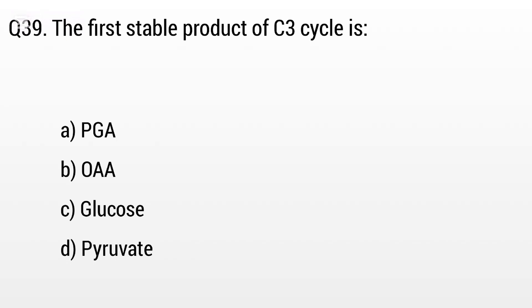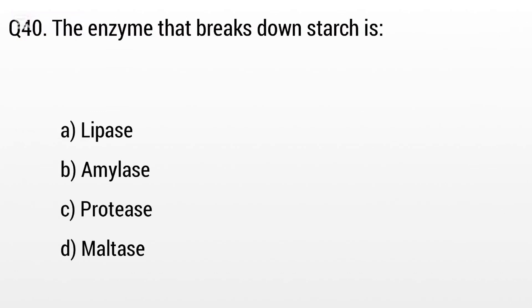Question 39. The first stable product of the C3 cycle is: Option A: PGA (3-phosphoglycerate), B: OAA, C: Glycolysis, D: Pyruvate. The right answer is option A, PGA.